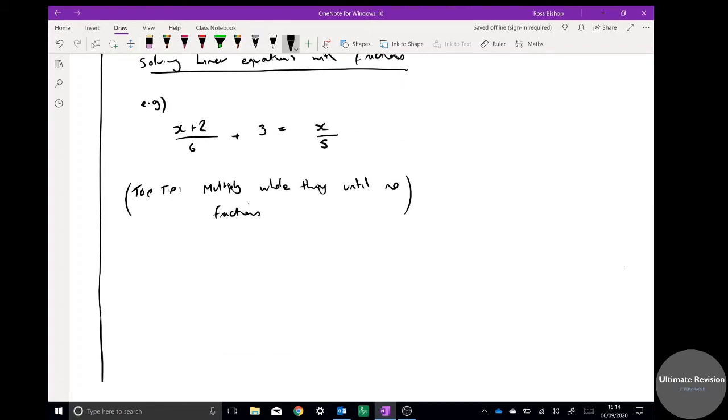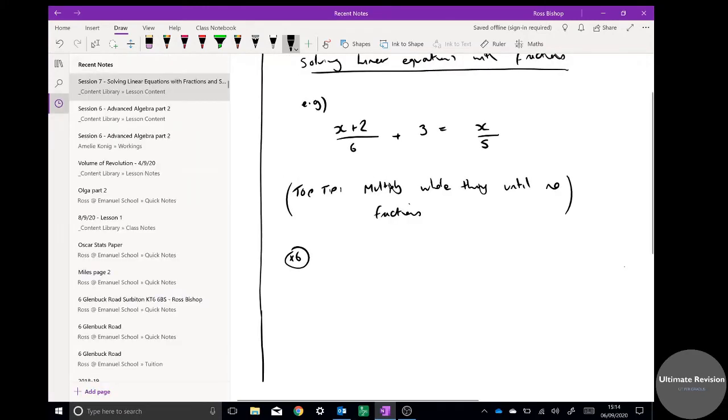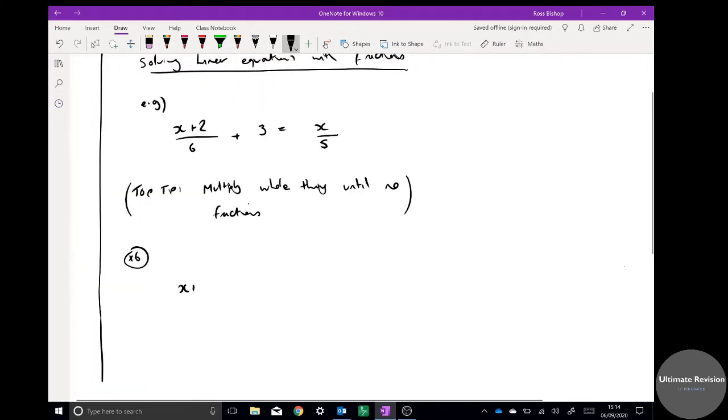This is going to help you big time with lots of things in algebra. Multiply everything until you eliminate the fraction. In this case you can do it all in one go, but I quite like to do it in stages because I find I'm less likely to make a mistake if I do that. I'm going to times the whole thing by 6. The first term there will now become x plus 2, second term, remember I've got to times that by 6 as well, 18. And the third term, if I times that by 6, I just get 6x over 5.